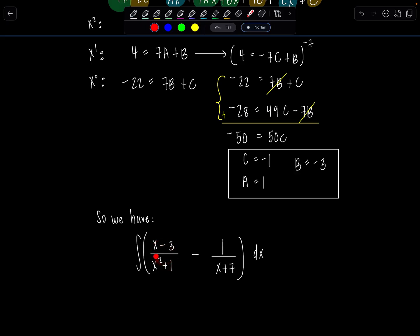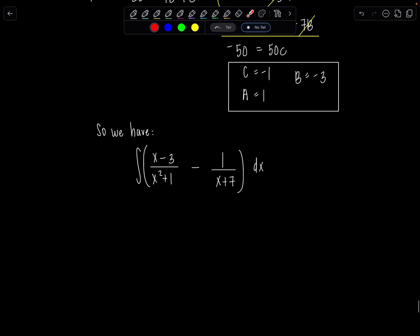This term here, we're actually going to split into two. I'll put x over the denominator and the constant separately. You'll see why in just a second. So we have x over x squared plus 1 minus 3 over x squared plus 1 minus 1 over x plus 7 dx.